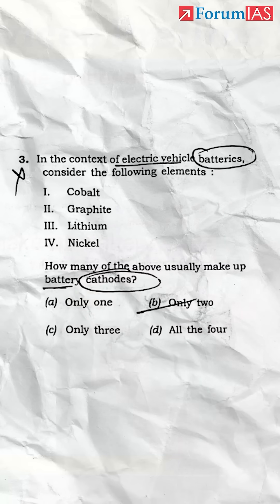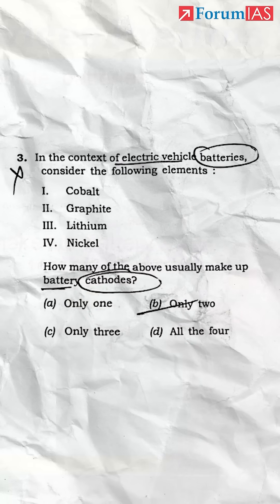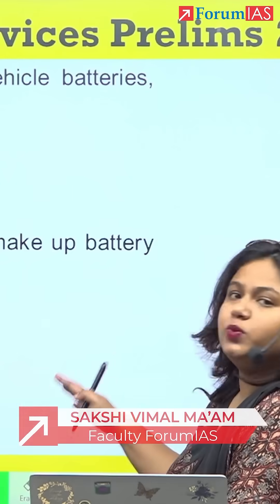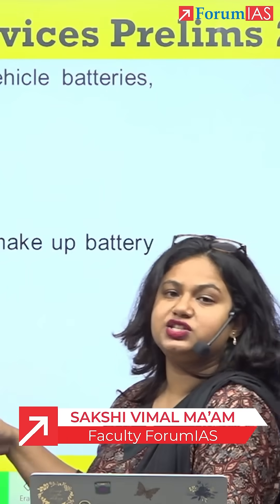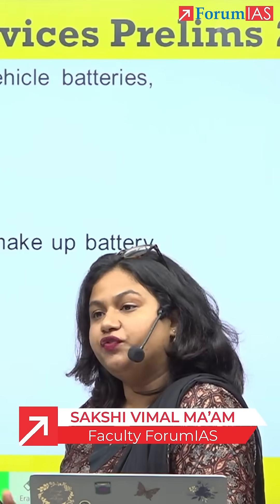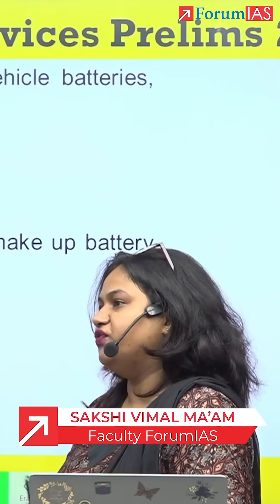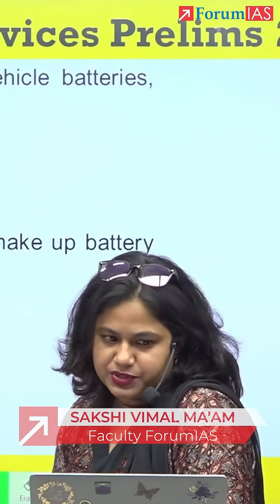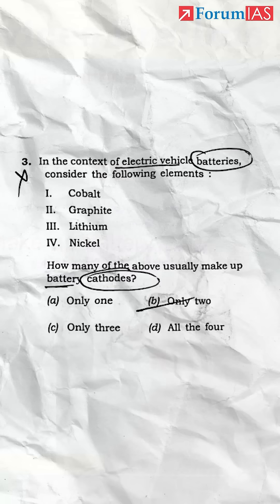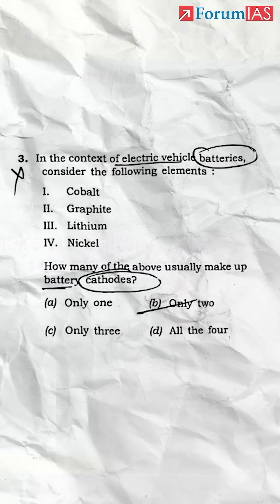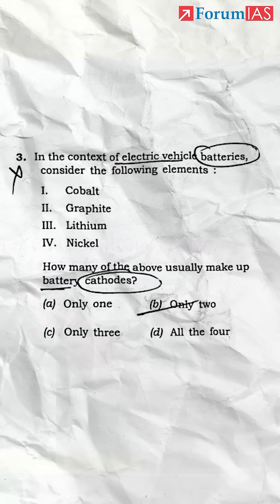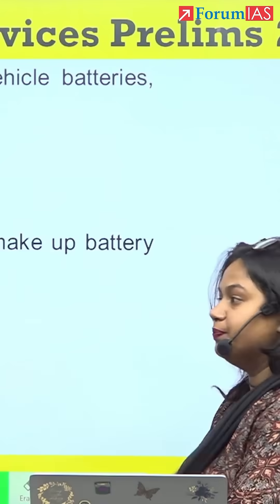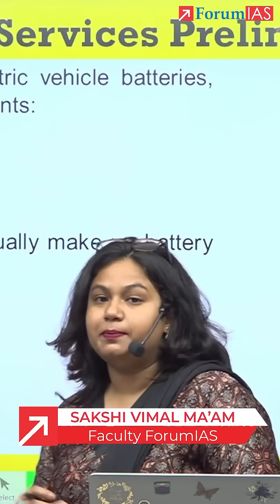In the context of electric vehicle batteries, consider the following elements. It is the third question in the series in which we are talking about the type of fuel, the type of vehicle, and alternative mechanisms. So, electric vehicle batteries — how many of the above usually make up battery cathodes? For this, we first have to revise what the battery mechanisms are like.